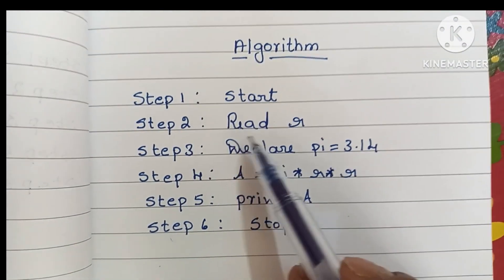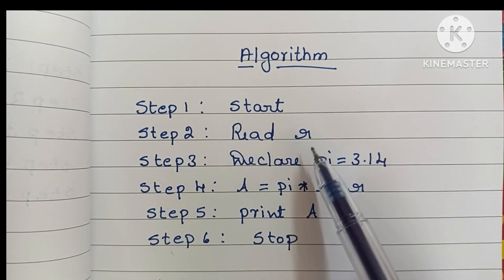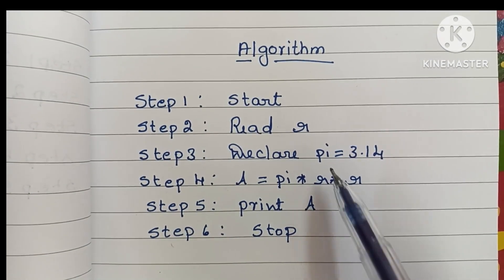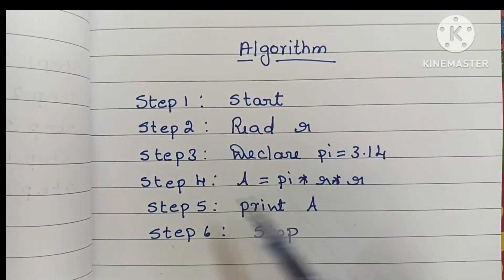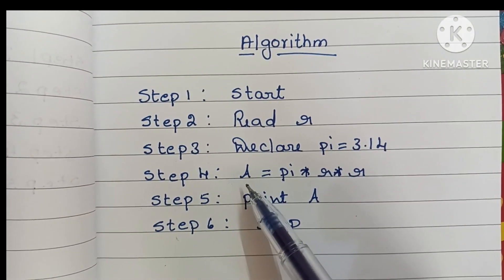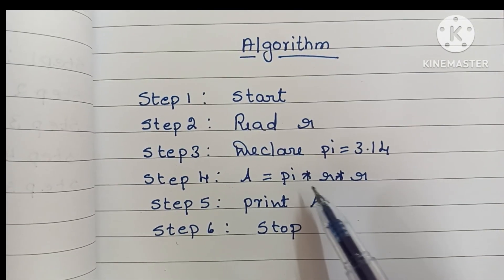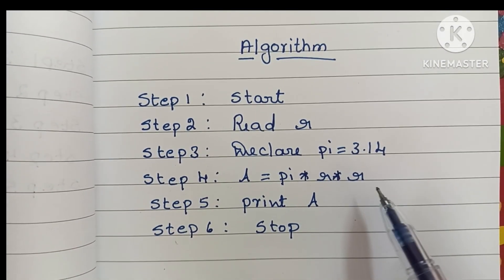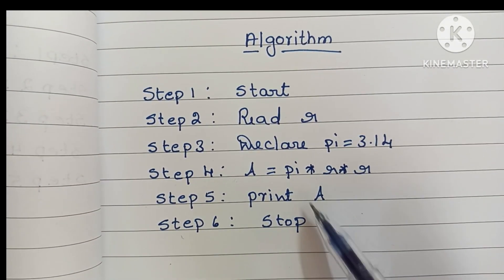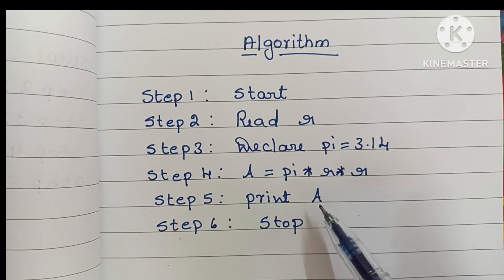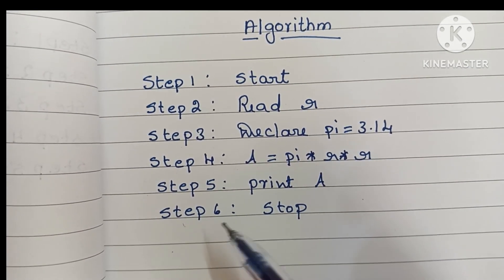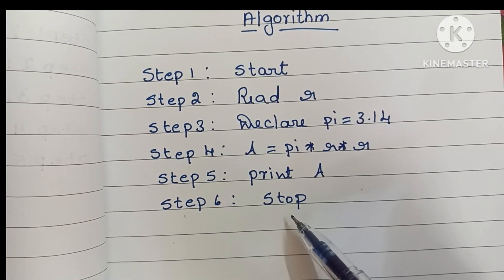To recap the algorithm: step one — start; step two — read r; step three — declare pi equal to 3.14; step four — calculate A equal to pi into r into r; step five — print A; step six — stop.